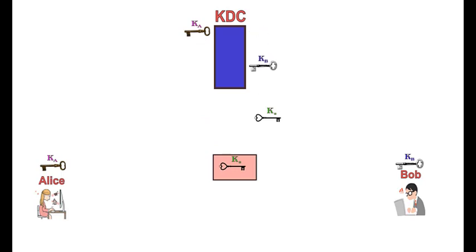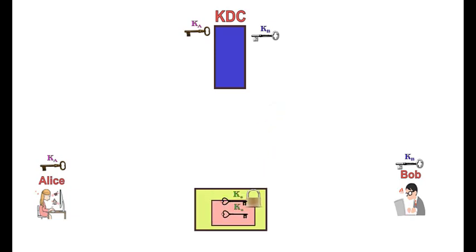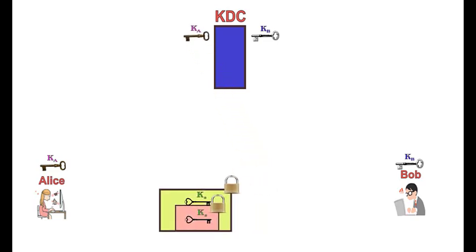KDC encrypts the session key with Bob's key. Then takes the other copy of the session key along with the encrypted key and encrypts the entire thing with Alice's key and sends it to Alice.